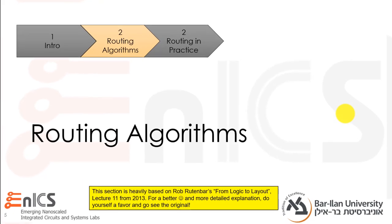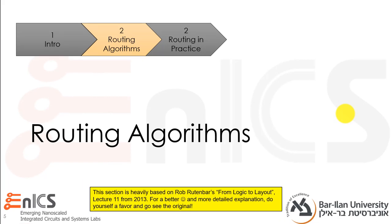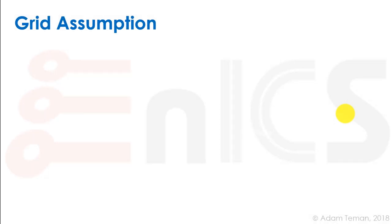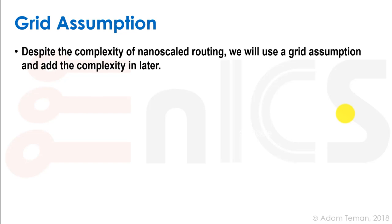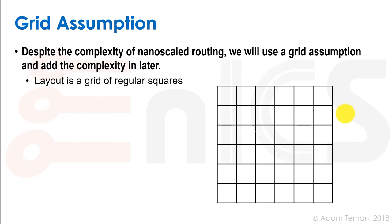Let's start by discussing some basic routing algorithms — this is based on Rob Bruttenbar's wonderful course, and I'd recommend turning to his lecture slides for more detail. We're going to use a grid assumption. Despite the complexity of nanoscale routing, we'll use a grid assumption and add complexity later.